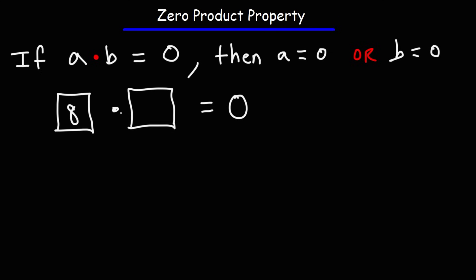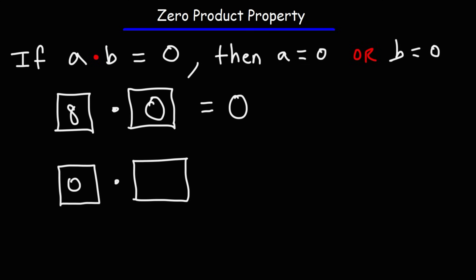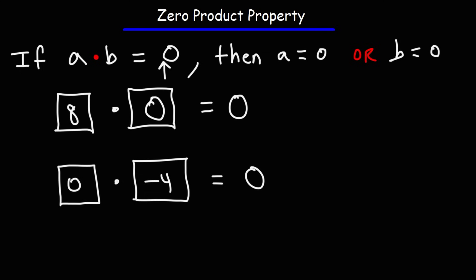For instance, if the first number is 8, the second number has to be zero. It doesn't matter what the first number is — if it's 6, 12, or 15 — as long as the second number is zero, the whole thing is zero. If the first number is zero, it doesn't matter what the second number is; it could be negative 4, 7, or 12. Zero times anything is zero, so whenever you have two things that multiply to zero, one of those things has to be zero.